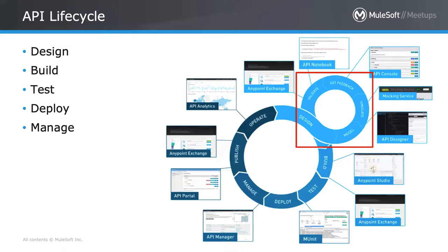Anyone in your organization can then use that same API you created. In the build phase, you're actually giving life to your API — you're building flows around your API definition. Build the RAML first so you don't have to come back and redo it later. I've seen a lot of APIs — and I've been guilty of this myself — where you just stand something up quickly with an HTTP listener and have no API definition around it.